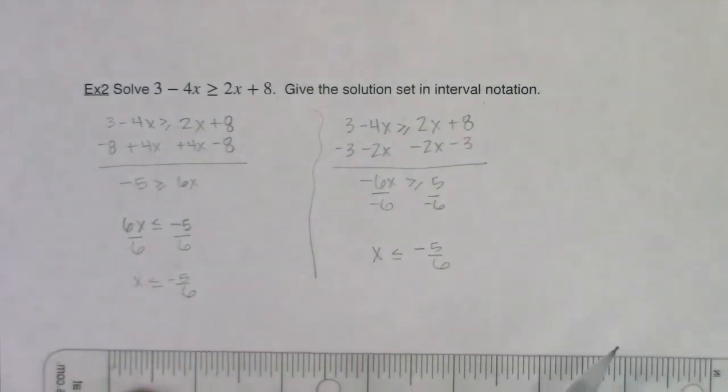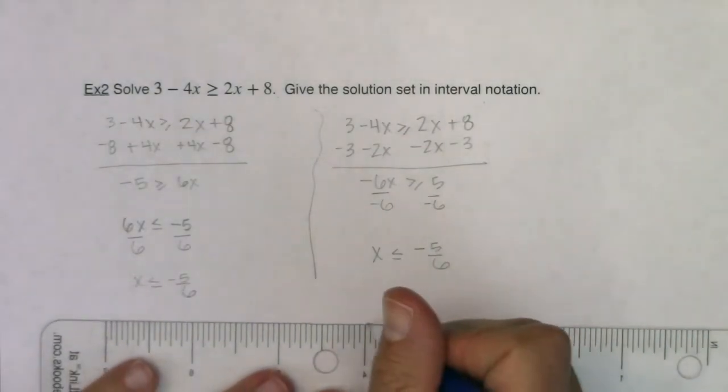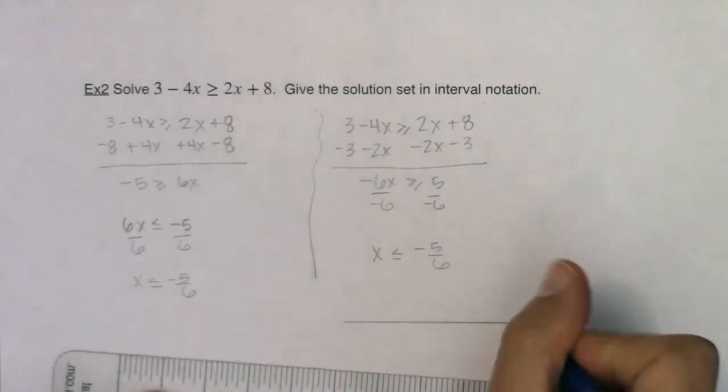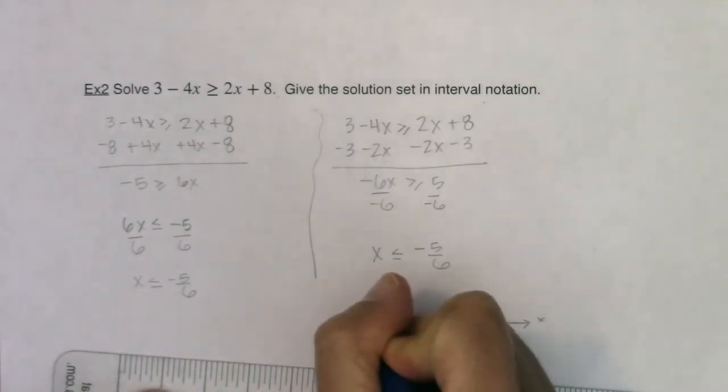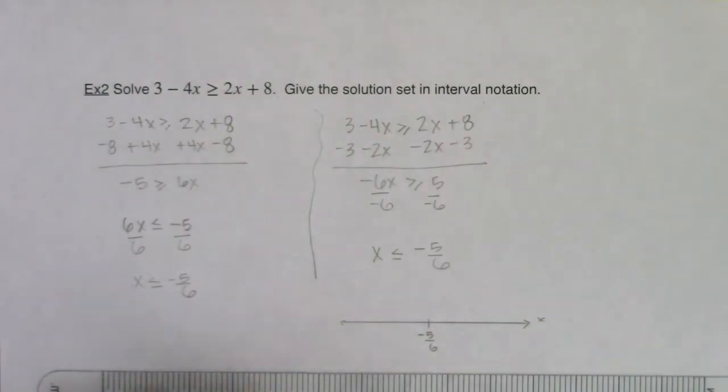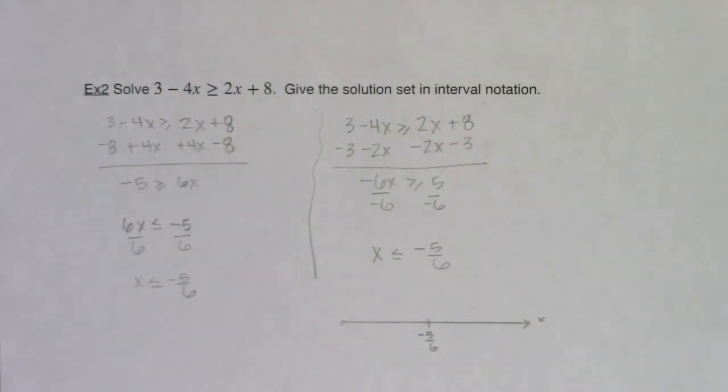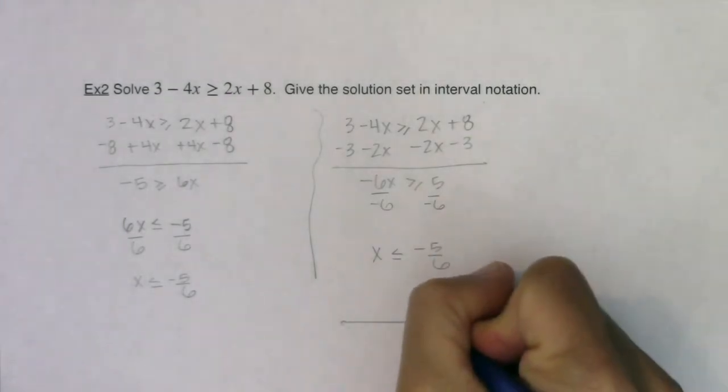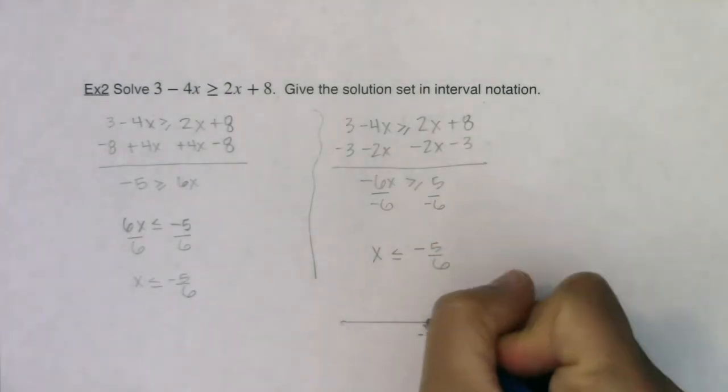I want to graph it just so we can get some feels for that. If I was going to make my number line, here's my x-axis and then I have wherever negative 5/6 is. And because I have a less than or equal to symbol, I'm going to put a closed dot here, and less than or equal to means go to the left.